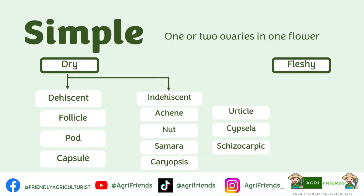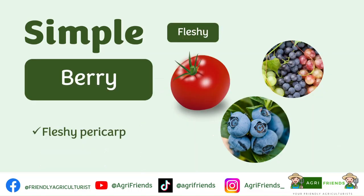Now let's proceed to the fleshy fruits, or those with high water content at maturity. We have berry, hesperidium, pepo, pome, and drupe. Berries are fruits that have an entirely fleshy pericarp with seeds. Examples are tomatoes, grapes, and blueberries. Berries are fruits with an edible pericarp — all layers of the pericarp are edible.